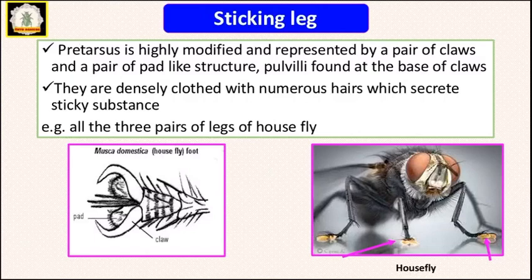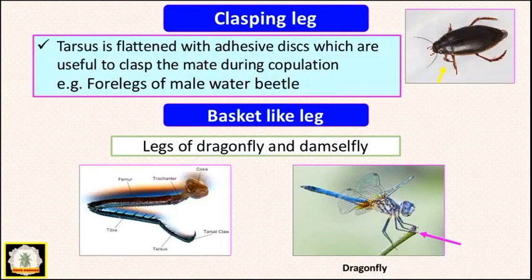The next type is sticking legs. In this type, the pretarsus is modified as a paired claw, and a pad-like structure is present with pulvilli at the base of the claws. They have numerous hairs that create sticky substances. For example, in house flies, all three pairs of legs are used for sticking purpose.